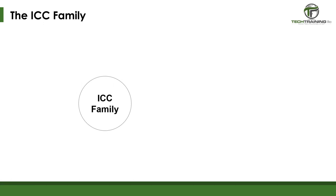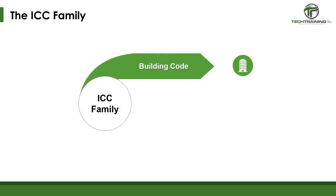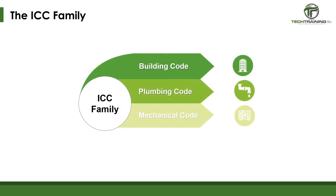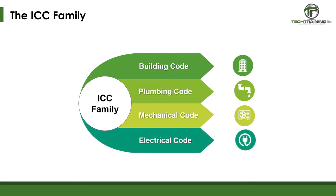Building codes set formal rules for things such as the design of buildings, the way buildings are to be built, the materials used to construct the buildings, and the overall performance of buildings. The core family of building codes consists of the building code, which covers the structure itself, a plumbing code, mechanical code, and electrical code. In some locations, this group of codes is known as the building code for that location, but there are many other building codes beyond these four.